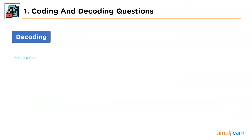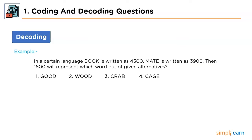Let's look into the sample question to understand how these kinds of problems work. The problem statement states that in a certain language, the word 'book' is written as 4300, 'mate' is written as 3900. Then 1600 will represent which word out of the given alternatives? We have been provided with two examples representing the logic of encoding, so let's look at each one by one.